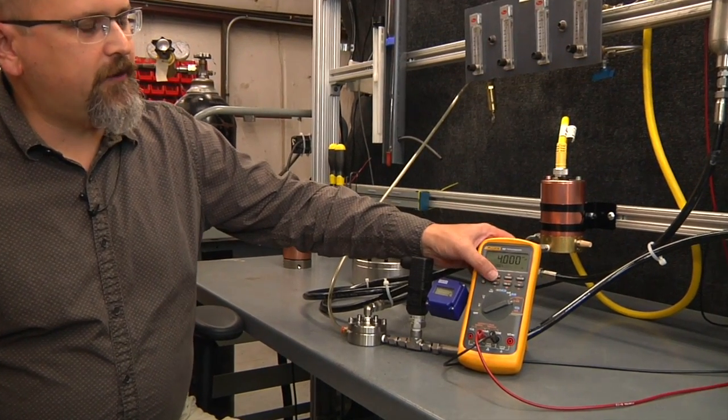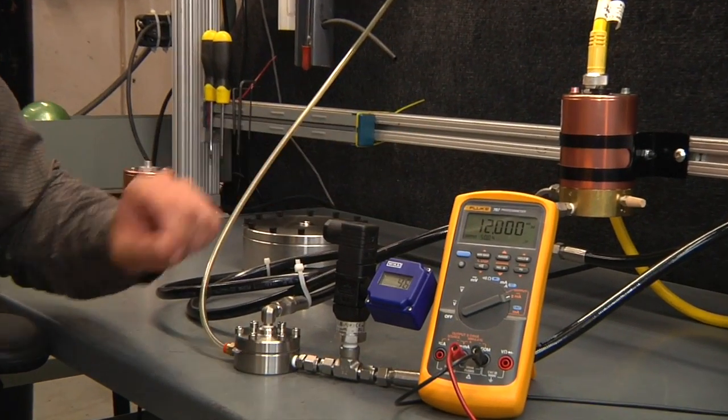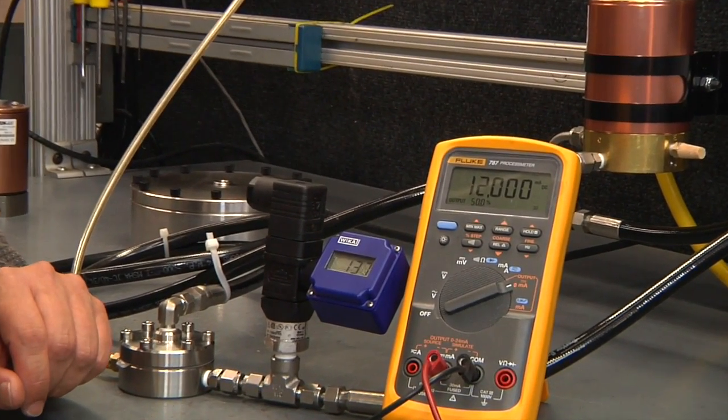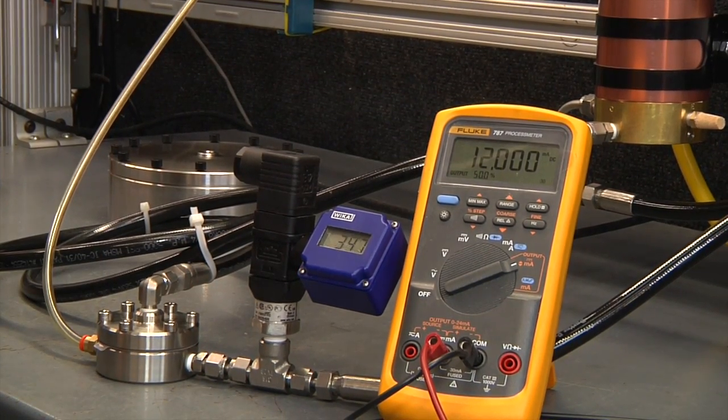I'll go ahead and increase the command signal from 4 milliamps to 12 milliamps. Since that's half scale, we should see the pressure in the system increase to about 500 PSI.